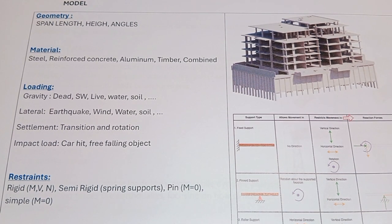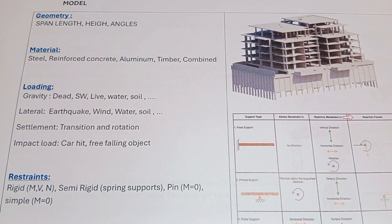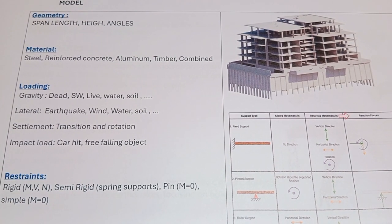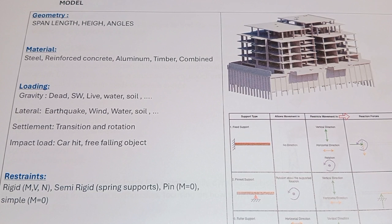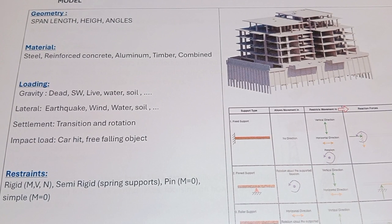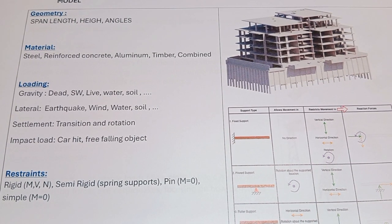The next step is loading. We need to define what loads the structure must take. Gravity loads include dead load, self-weight, live load, water ponding, and soil — for example, if there is a roof garden, pond, or pool in the building applying gravity loads on elements. Lateral loads include earthquake, wind, water pressure, and soil pressure.